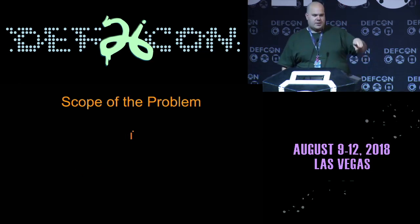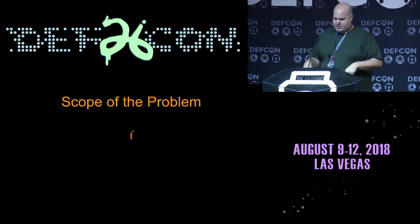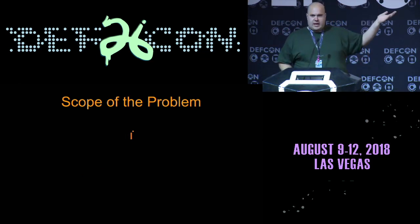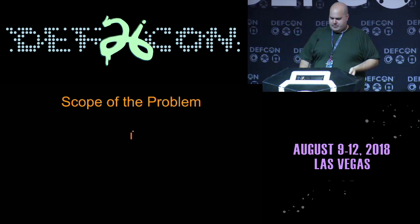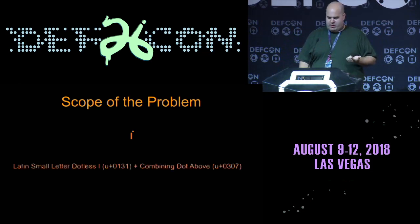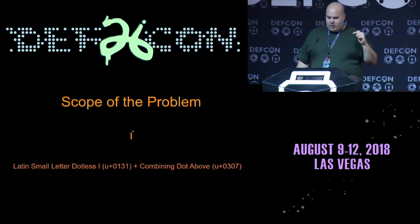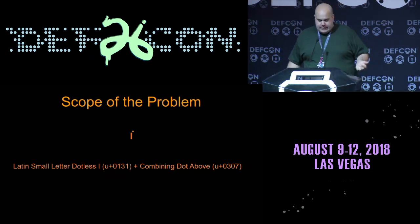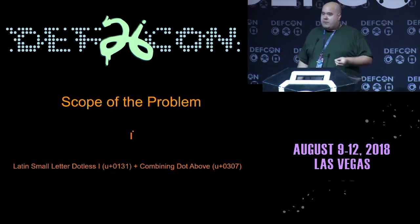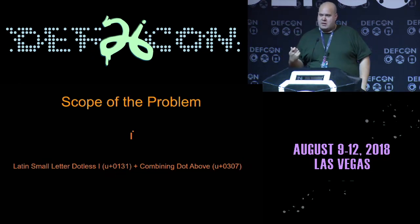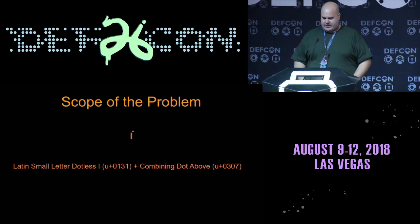This is meant to look like a lowercase 'i,' and in a lot of fonts it will. But it's not actually one character — it's two. Unicode has a 'Latin small letter dotless i' — I don't know why — and a 'combining dot above.' Combining characters in Unicode adhere to the character that came before them, used to apply accents, umlauts, things like that.